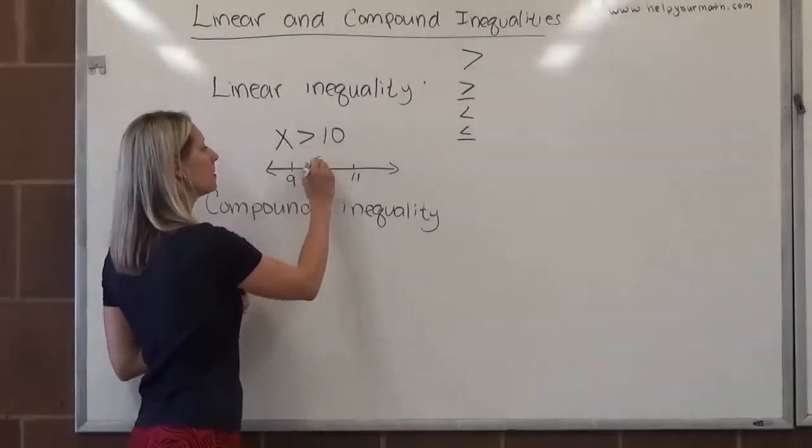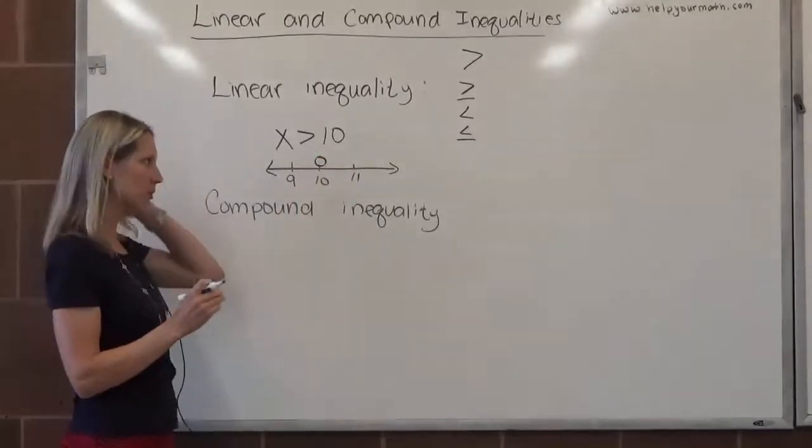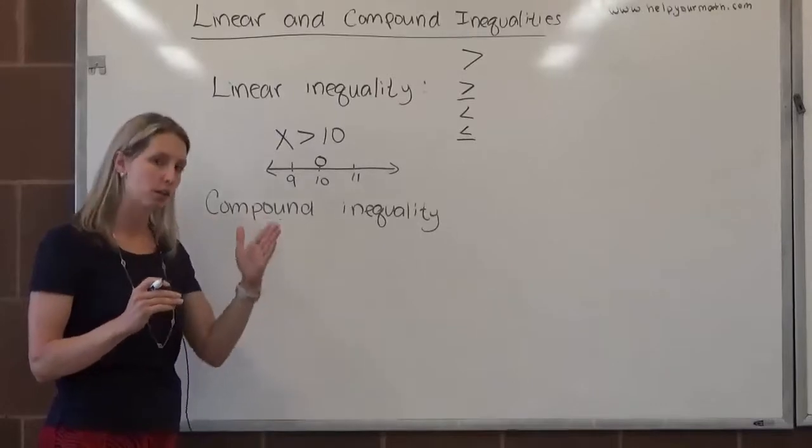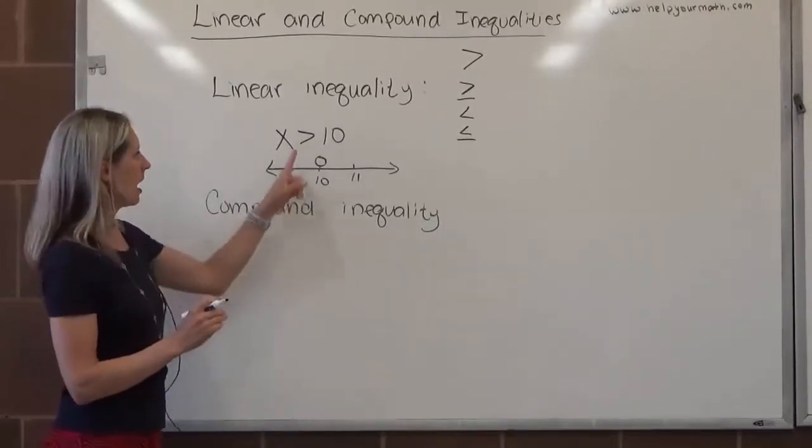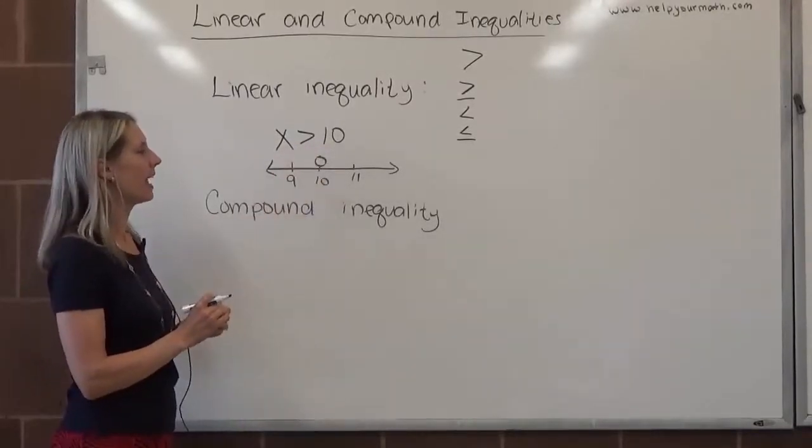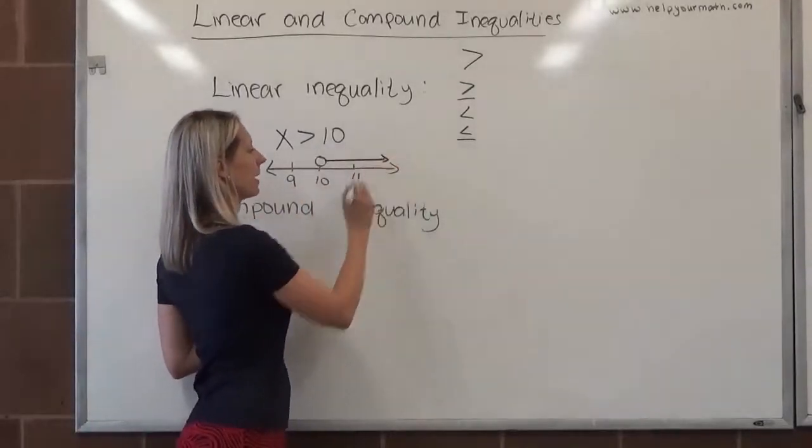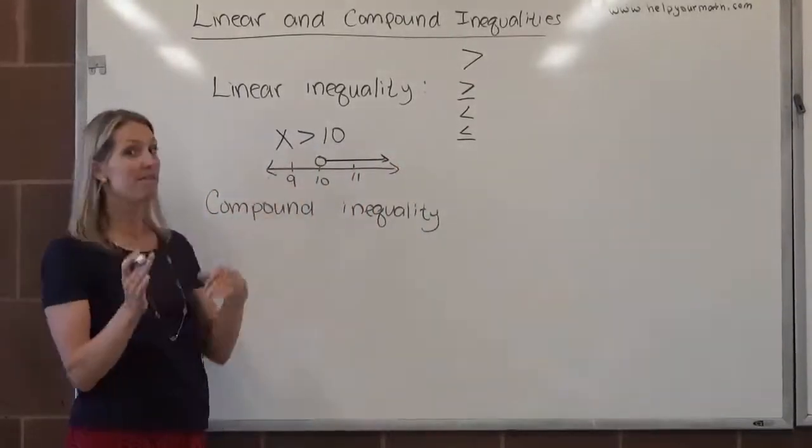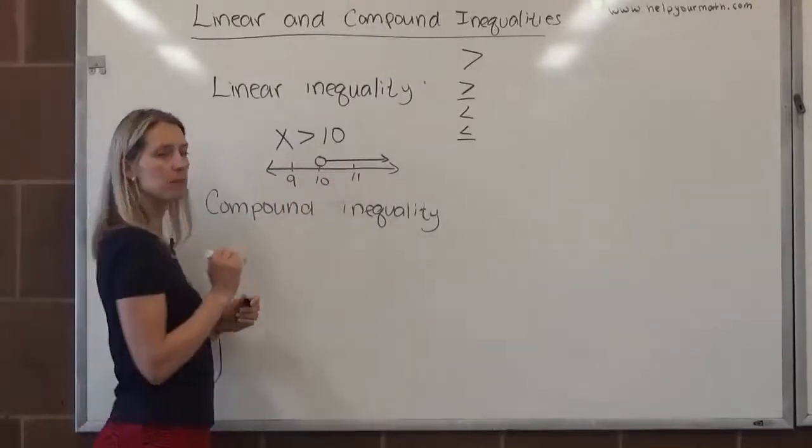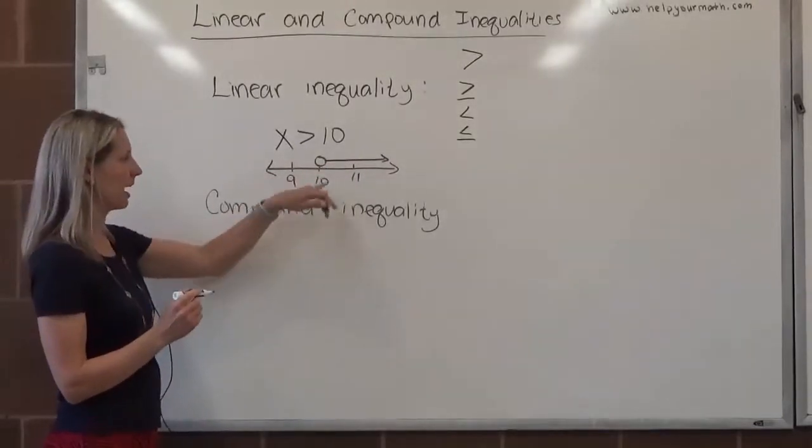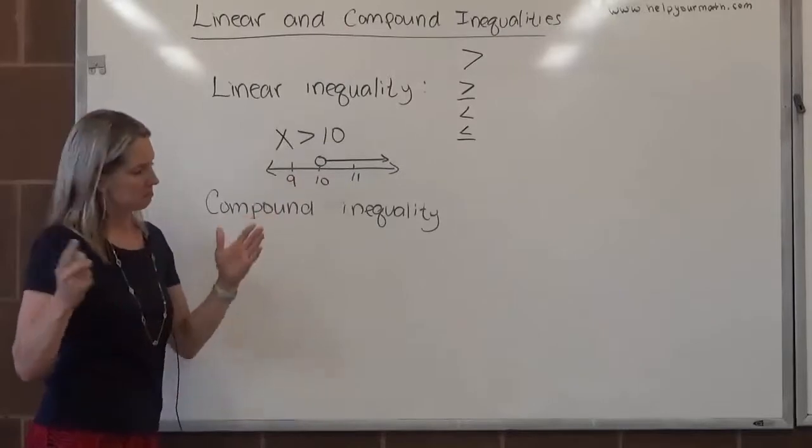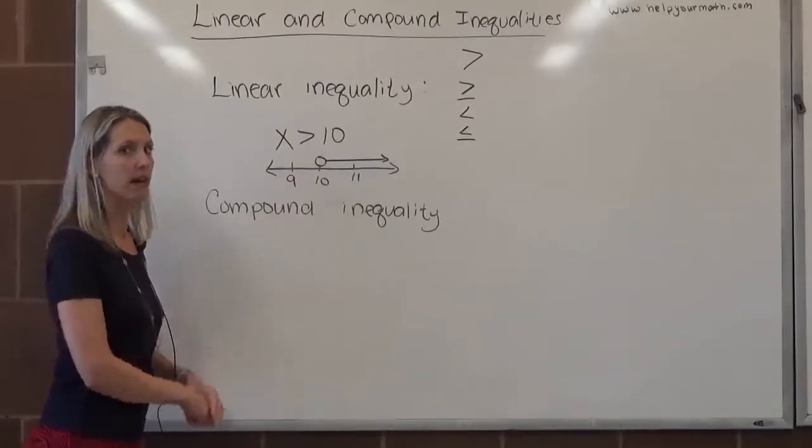I put an open circle. The open circle indicates that this is where the solutions start, but we are not including this particular number. Numbers that are bigger than 10 are to the right of 10 on a number line, so we would draw an arrow going this way. You can get fancy if you want. Some people will color underneath in between the line itself and the number line. It's up to you or what your professor tells you to do.